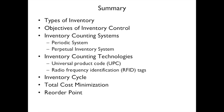In summary, we've talked about the types of inventory, the objectives of inventory control, inventory counting systems — the periodic and perpetual systems — technologies for inventory counting including universal product codes and RFIDs, the inventory cycle, total cost minimization, and the reorder point.